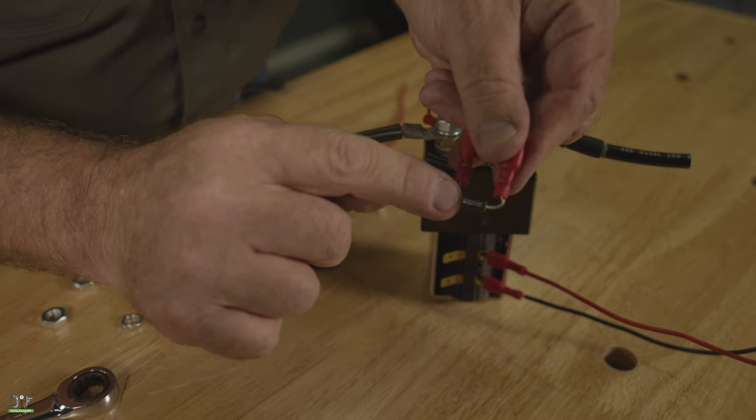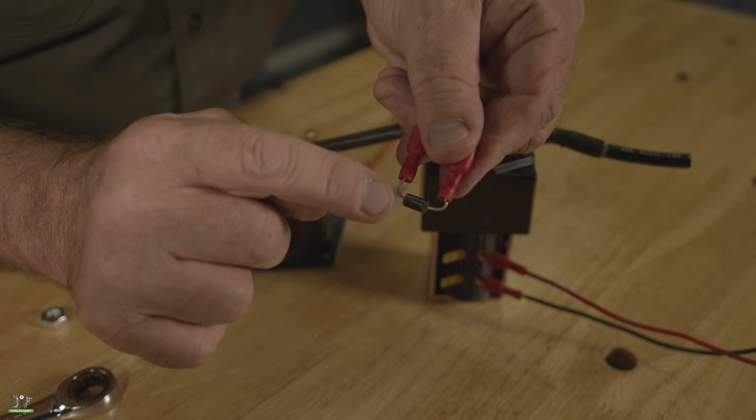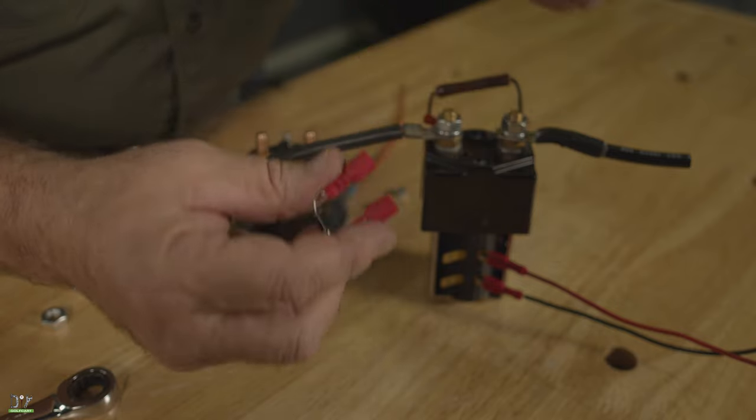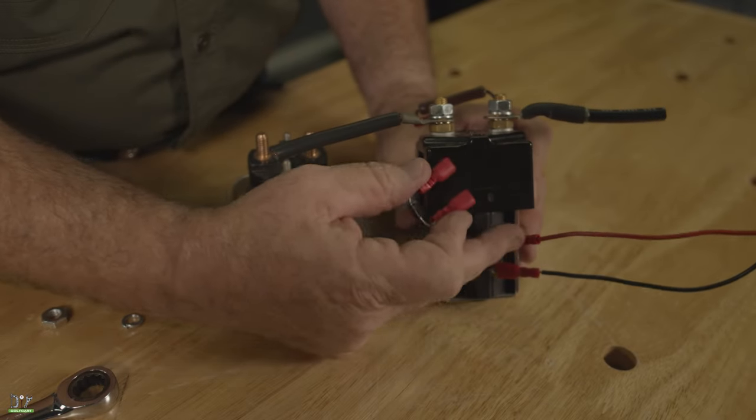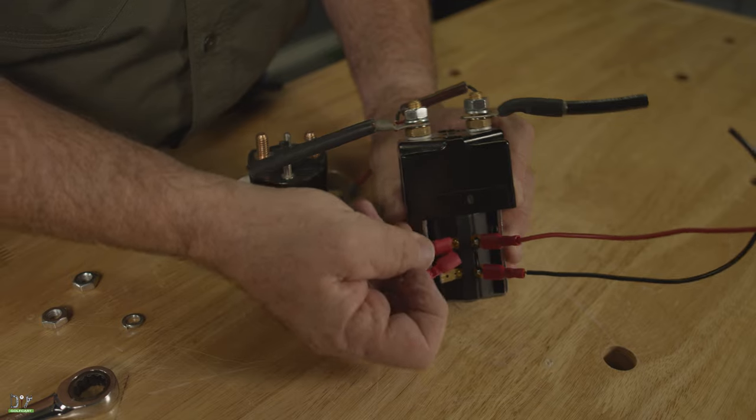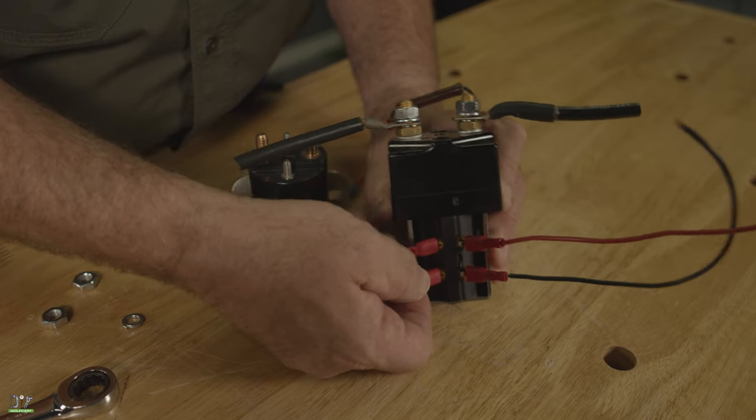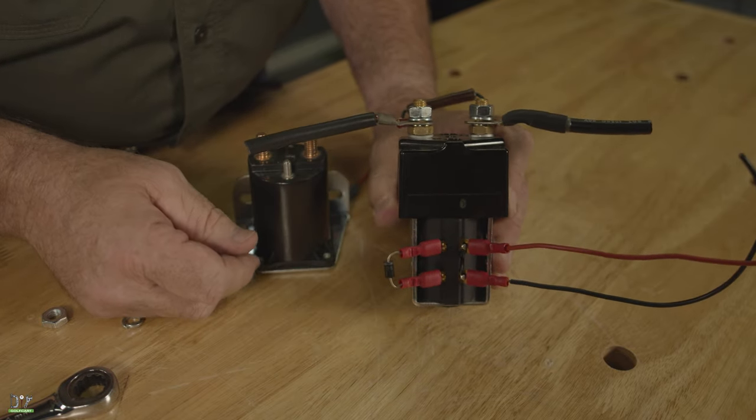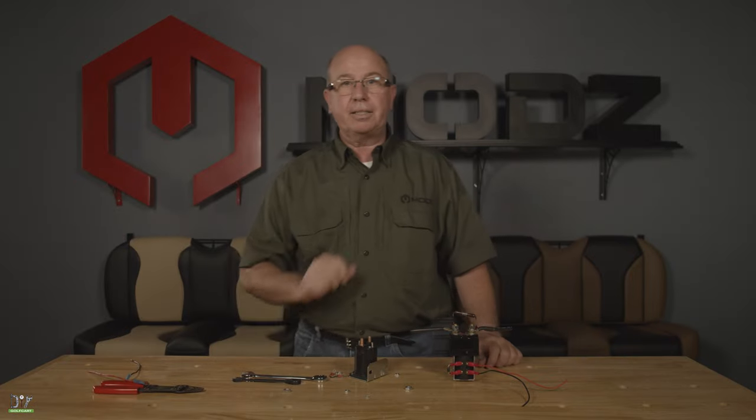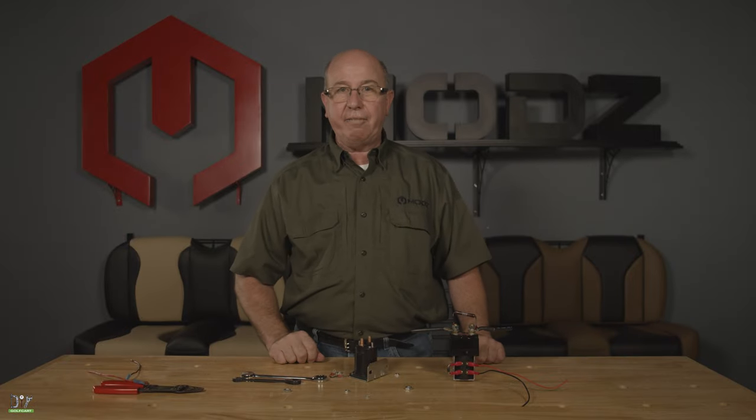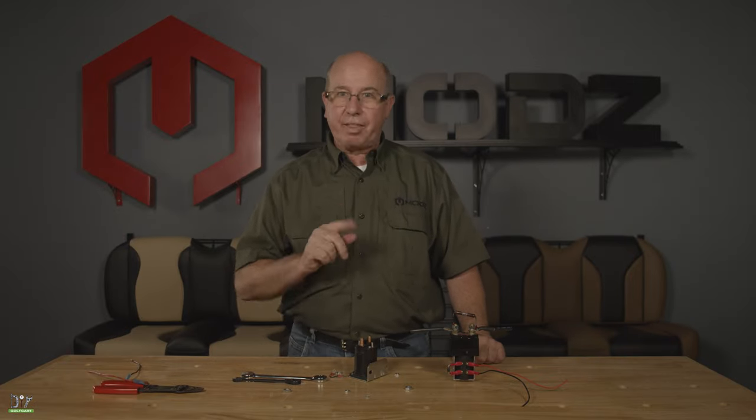Our diode also has a ring on it. This ring will always go towards the positive. It's our positive side coming in. There we go. And that is how you hook up a heavy-duty solenoid. Thanks for watching.